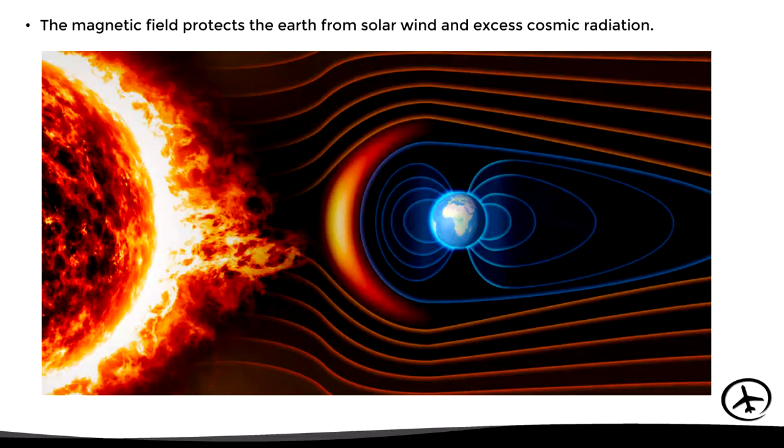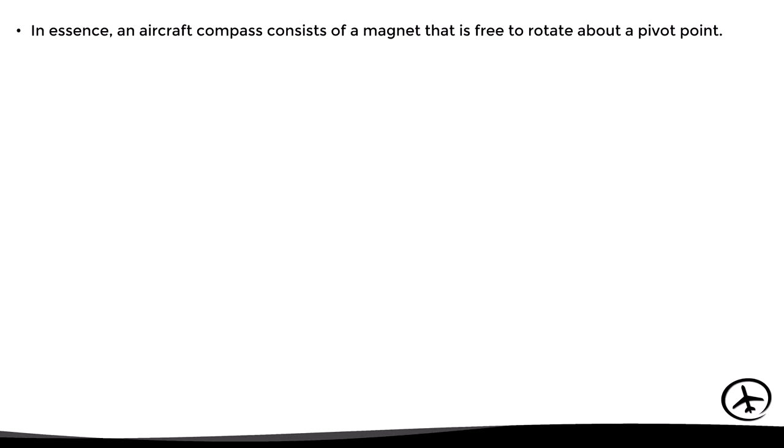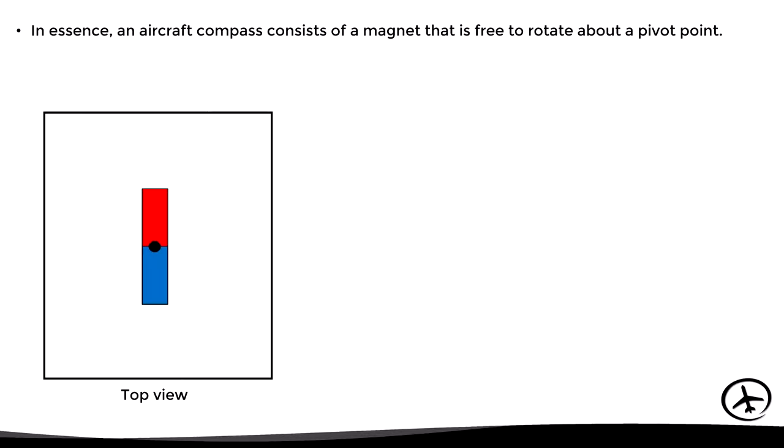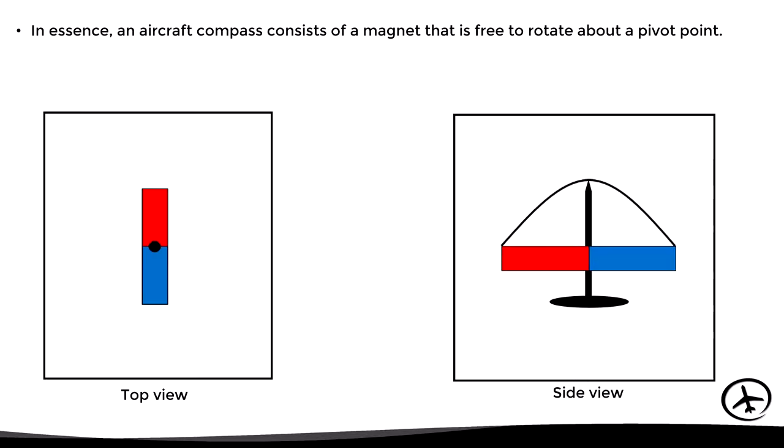The question now is how does a magnetic compass actually work, or in other words, how does it use the magnetic field to work? In essence, a magnetic compass is basically a magnet that is free to rotate about a pivot point. The magnet is practically suspended in the air, only supported by a small pivot point around which it is free to rotate.